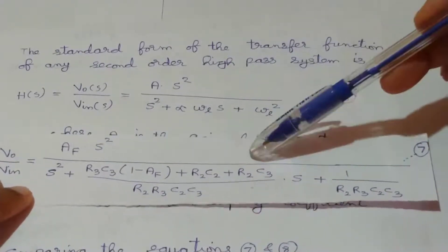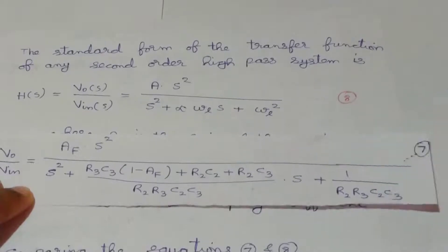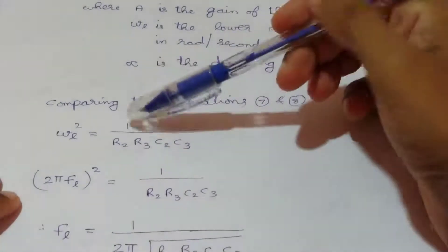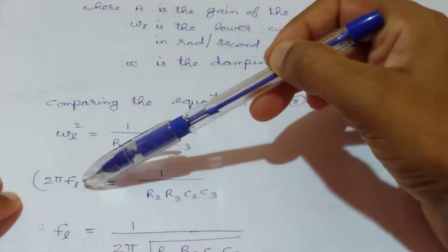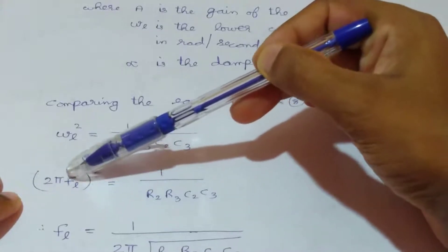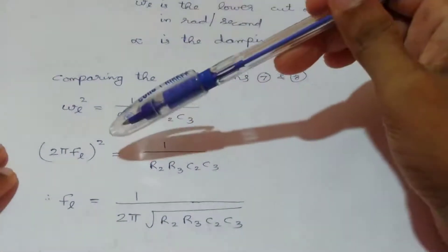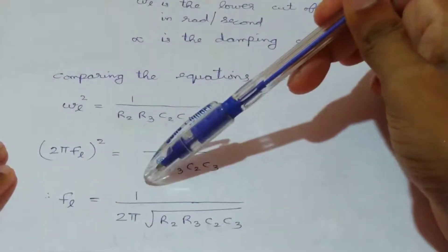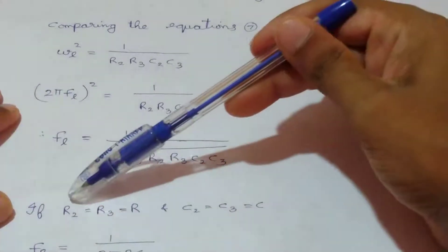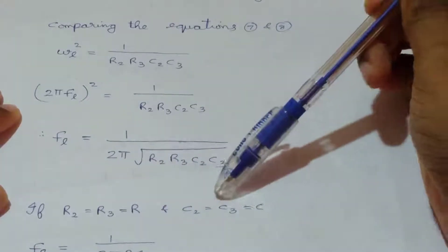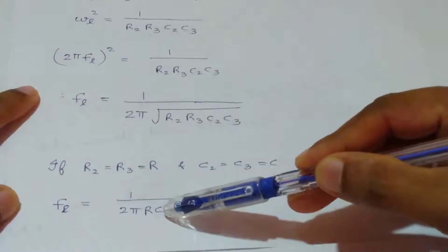From the comparison, ωL² = 1/(R2R3C2C3). Since ωL = 2πFL, we get (2πFL)² = 1/(R2R3C2C3), giving FL = 1/(2π·√(R2R3C2C3)). If R2 = R3 = R and C2 = C3 = C, this simplifies to FL = 1/(2πRC).